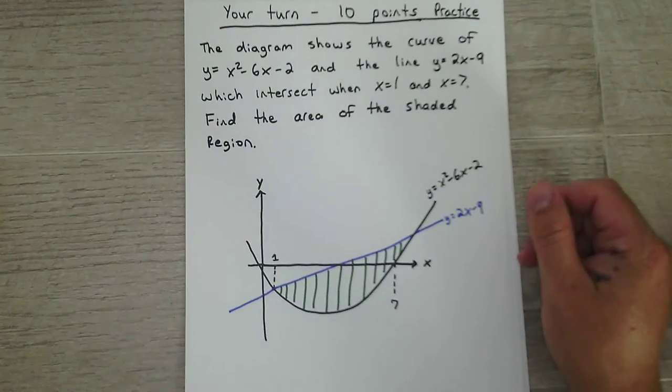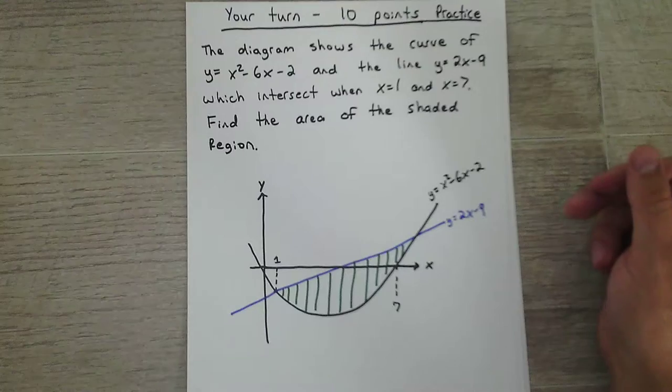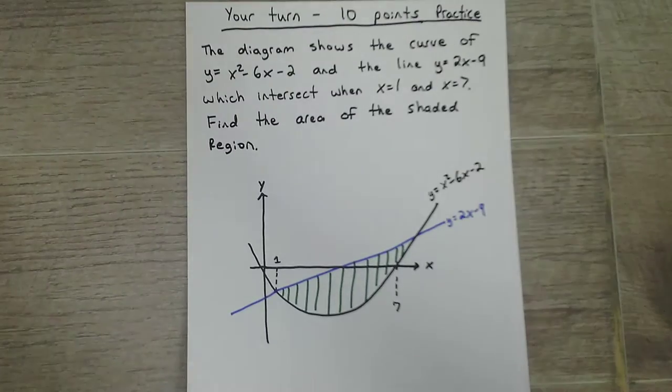So the question I gave you yesterday was this. Diagram shows the curve and the line which intersect. Find the area between the shadow regions.